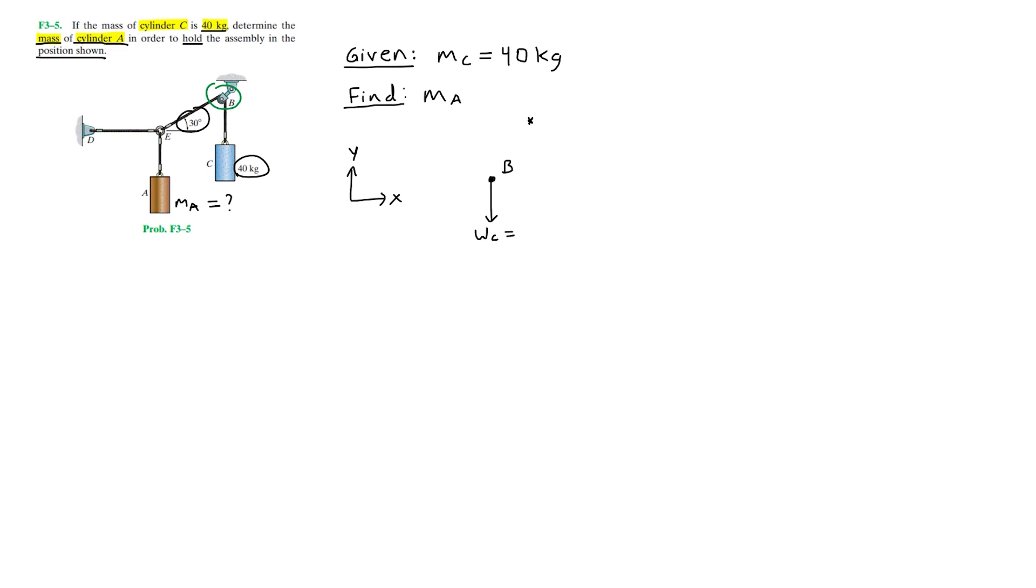We know that weight is equal to mass times the acceleration due to gravity. So WC will be equal to MC times g, which is equal to 40 kilograms times 9.81 meters per second squared, which is equal to 392.4 newtons.